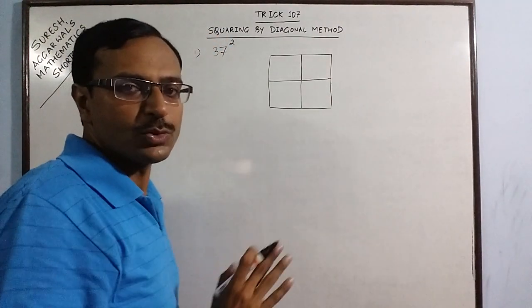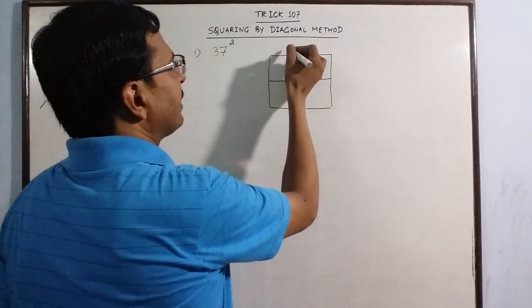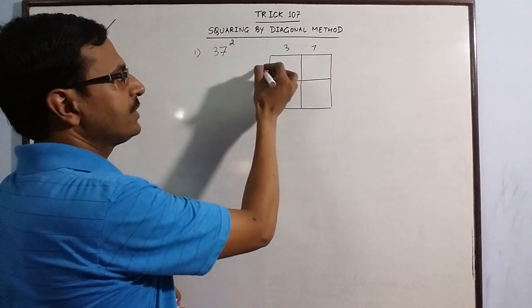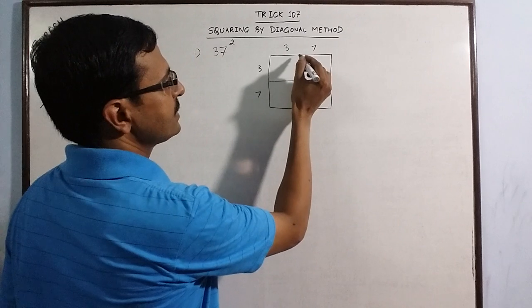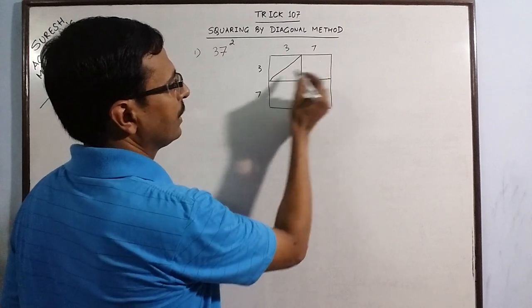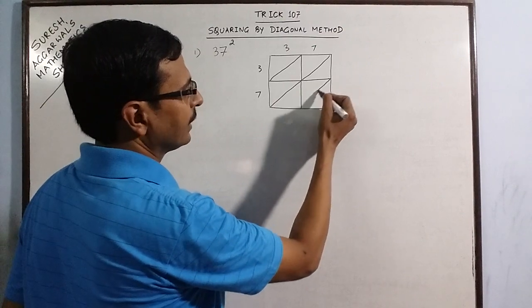I have constructed a 2 by 2 matrix and I will write 3737 here and 3737 here. Now I will draw the diagonals. This is one diagonal, this is the other diagonal and this is the third diagonal.